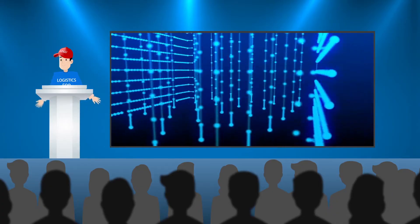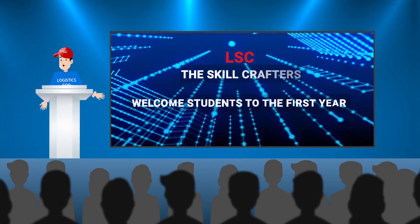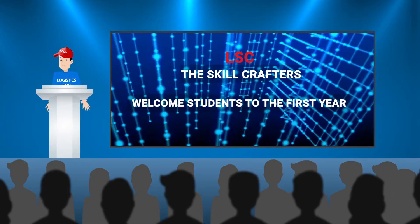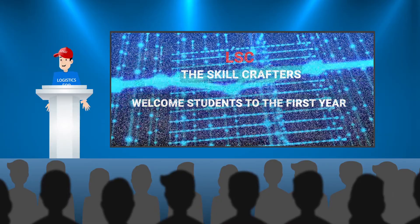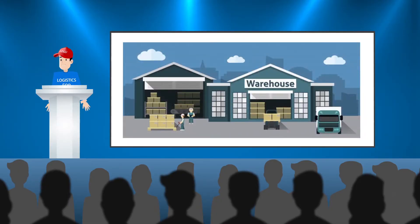Hello students, welcome on board to the exciting world of logistics. I am very happy to take you through the different types of warehouse layouts. The design of the warehouse is extremely important for efficient functioning, which can reduce human efforts, cost, and improve productivity. The objective of a warehouse layout is to arrange and coordinate space, equipment, and labour resources of the warehouse.